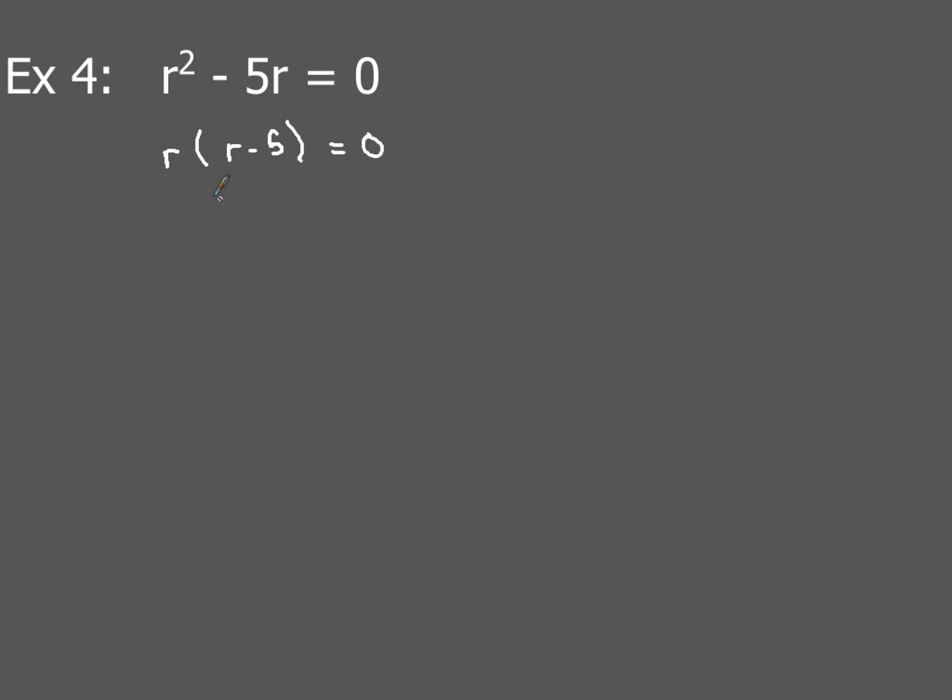Now in this situation, what you're going to do, this very first one, your answer is just going to be r = 0. This second factor, of course, r - 5 = 0, you know what to do with that. You're just going to end up with r = 5. So this one's a little bit different in that your first factor is just simply a variable. And anytime that happens, that particular solution is just going to be zero. So r = 0 is one of your solutions. And then r = 5 is your other solution.